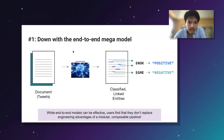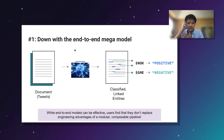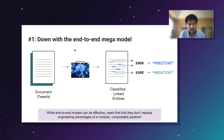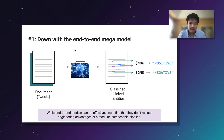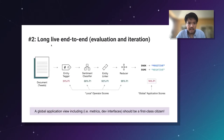First: down with the end-to-end mega model. While some problems can be solved with a single end-to-end model that goes from raw inputs to end outputs, we've seen users and customers find this doesn't replace the advantage of having a modular, composable system. It doesn't replace the need for testing multiple models, switching them in and out, or testing different pre-processing pipelines and business logic to format outputs into something usable.